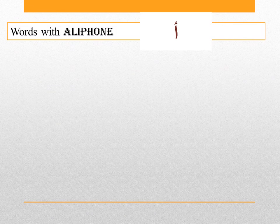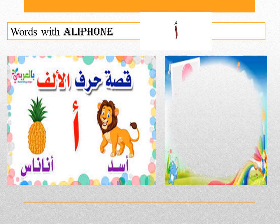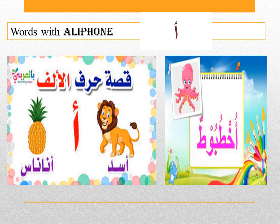Now we are going to see some words that start with Alif — say them after me. The first word is 'ananas,' which means pineapple. Ananas — can you hear the first letter? The second word is 'asadun,' which means lion. Repeat with me: ananas, asadun. Good job!